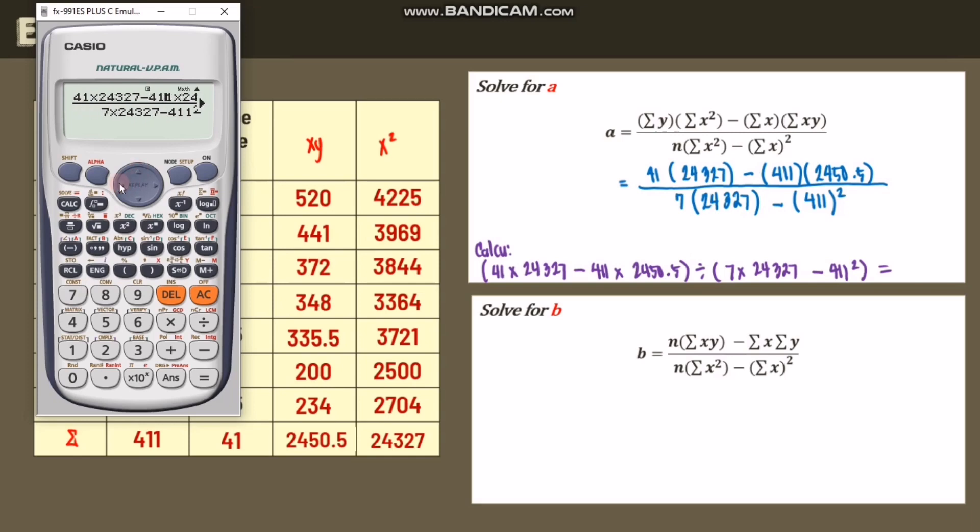So let's double check. We have 41, 24,327, 411, 2,450.5. So equals. So the answer will be equal to, let's get 4 decimal places. Once again, we get 4 decimal places. So we have negative 7.1261.